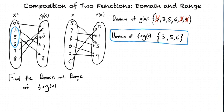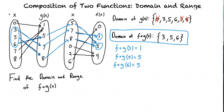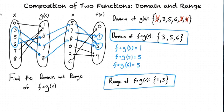So if we were to take the f of g of 3, we would get 1. The f of g of 5 is 5, and the f of g of 6 is also 5. So we can see that the range for our composite function is going to be 1 and 5.